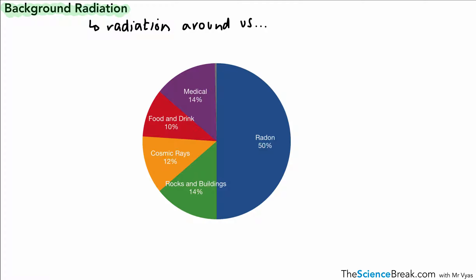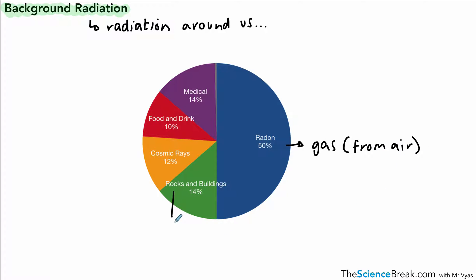Here's a pie chart showing all the different sources of background radiation. The first one on the right-hand side — the biggest dose, which is about 50% — is called radon, which is a gas found in the air around us. That's the biggest kind of dose of radiation you might get in the background.